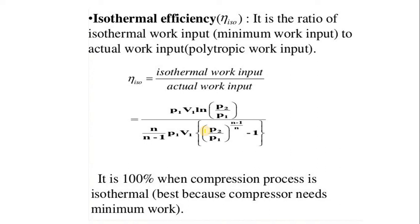The second important formula is isothermal efficiency. Isothermal efficiency is the ratio of isothermal work input to actual work input. The formula for isothermal work input is P1V1 × ln(P2/P1), and actual work input is [n/(n-1)] × P1V1 × [(P2/P1)^((n-1)/n) − 1], where n is the polytropic index. Isothermal efficiency is considered ideal because the compression process at isothermal conditions requires minimum work for the compressor.